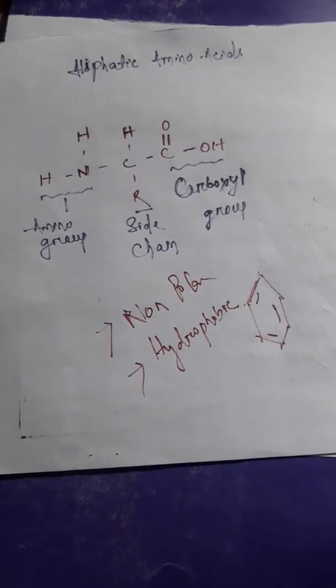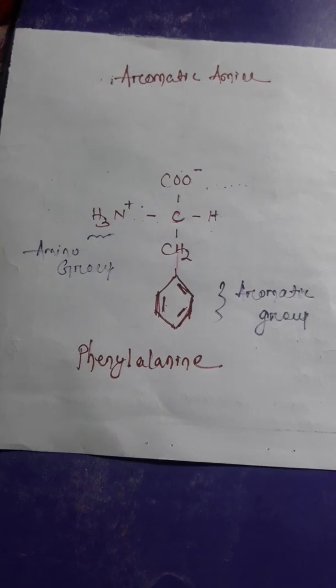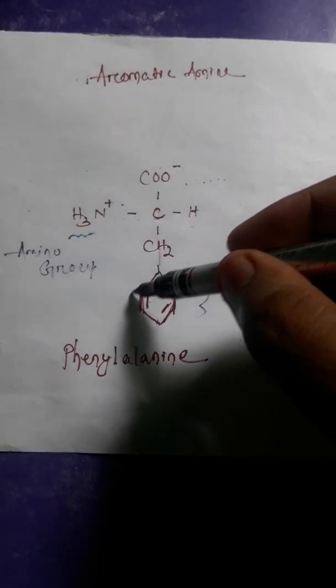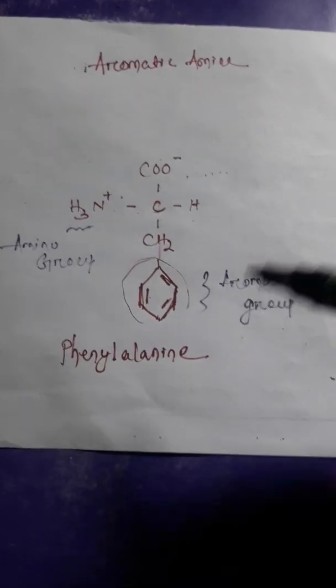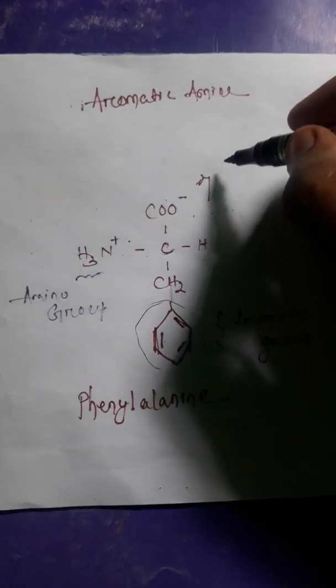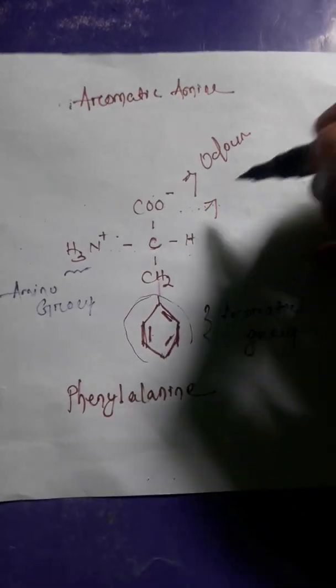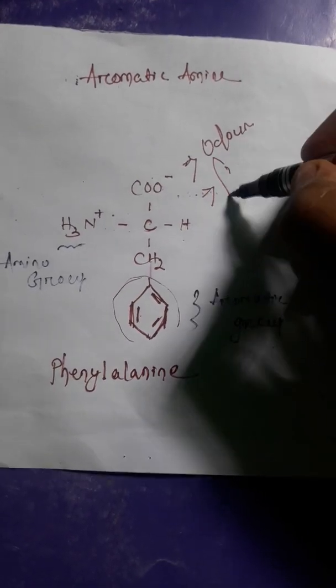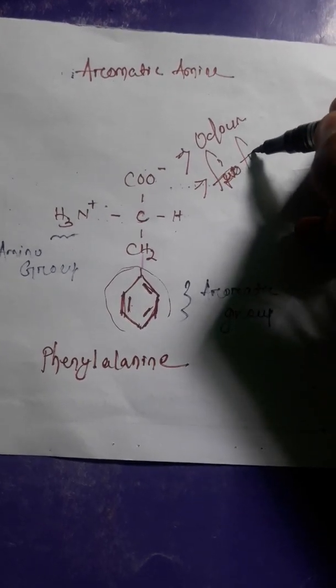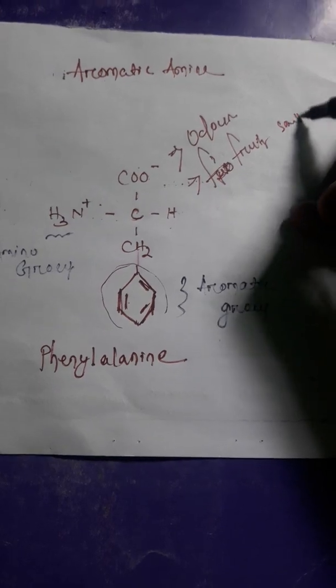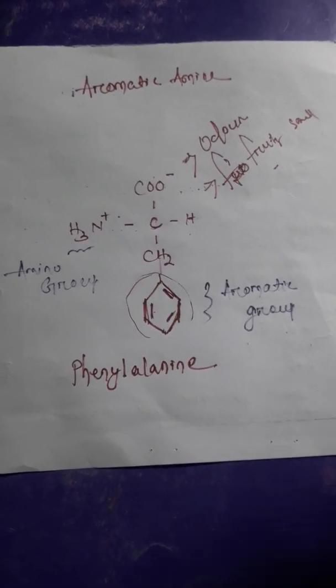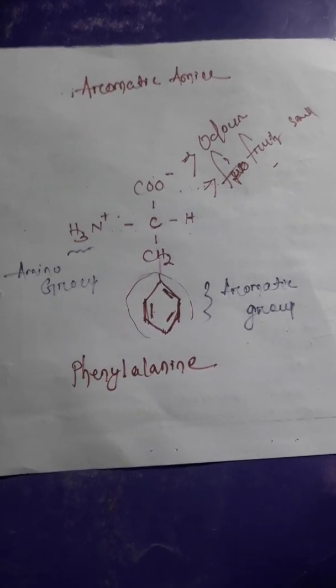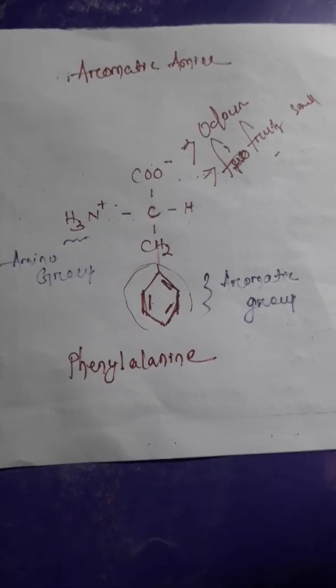Now we should go towards aromatic amino acids. Aromatic amino acids have a side chain with an aromatic ring, and they have a pleasant odor, a fruity smell. If we burn them, they burn with a special flame and we get a special smoke.